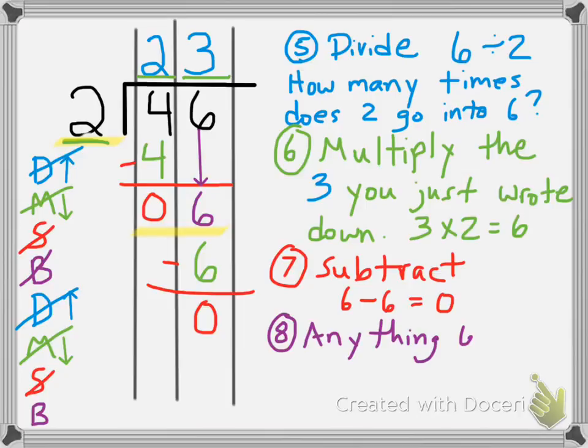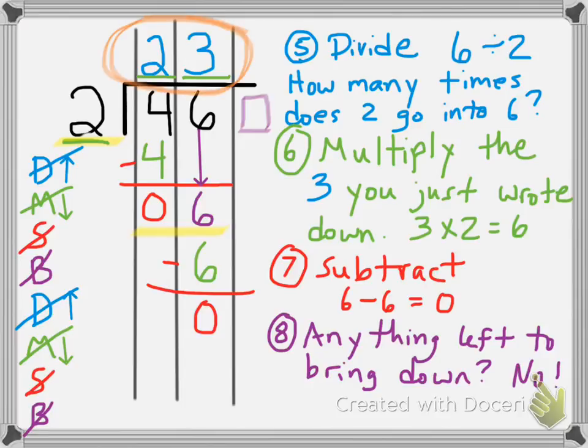And step 8 would be bring down. So we look, is there anything left to bring down? It would be right here in this box, and there's not. So I just cross out that B, and we are done. The 23 is my quotient, my answer. So, 46 divided by 2 is equal to 23.